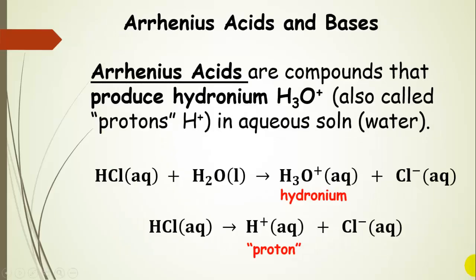Arrhenius acids are compounds that produce hydronium, H3O+, also called protons, in aqueous solution. Here we have an acid dissolved in water, producing hydronium and a chloride anion. An H+ from the acid is bonded to a water molecule to produce hydronium. You'll also see this written as hydrochloric acid forming H+ and chloride anions, but they do bond to a water molecule, so we'll stick with hydronium throughout this discussion.